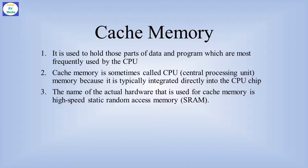Cache memory is located near the central processing unit. When we talk about data, we load it into cache memory. The processing speed is very high, but the memory size is small and cost-wise it is very expensive. Cache memory uses high-speed static random access memory.